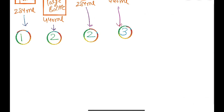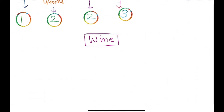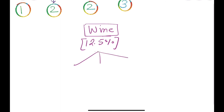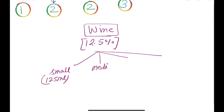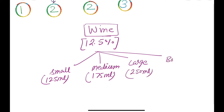Now let's talk about wine. Wine has a concentration of 12.5% most commonly. We have to remember 3 glass sizes: small glass which is around 125 ml, medium glass which is around 175 ml, large glass which is around 250 ml, and a bottle of wine which is around 750 ml.